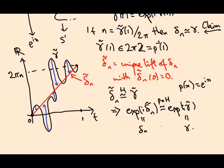So we found an n such that delta n is homotopic to gamma. That shows F is surjective. Hooray!